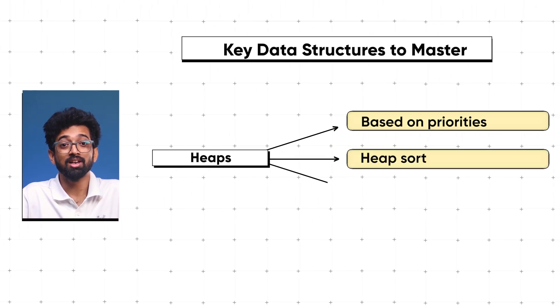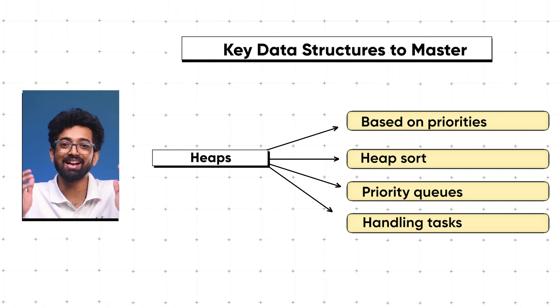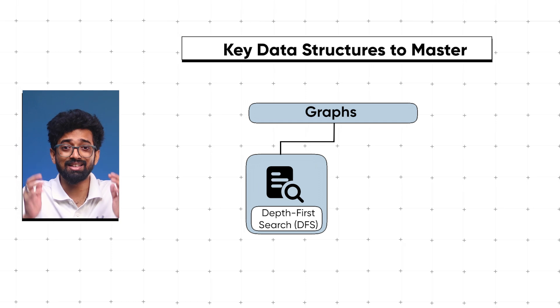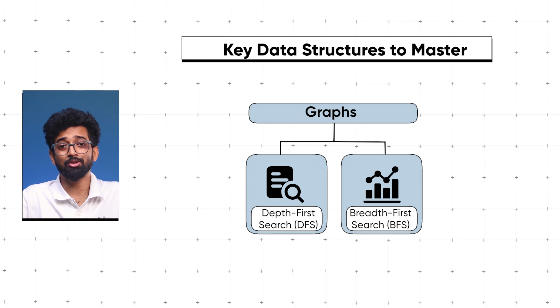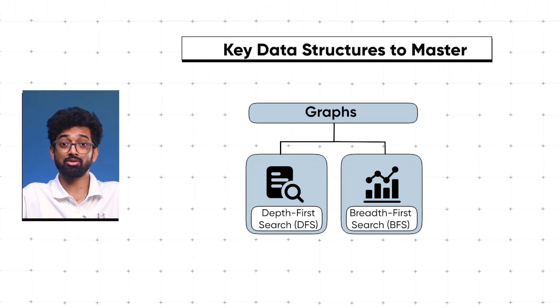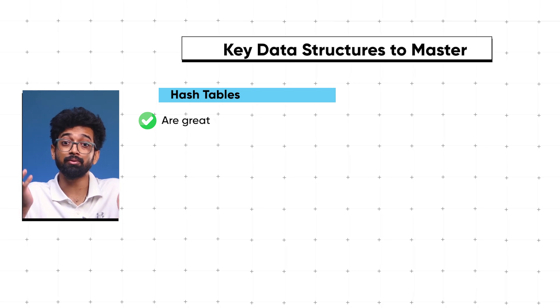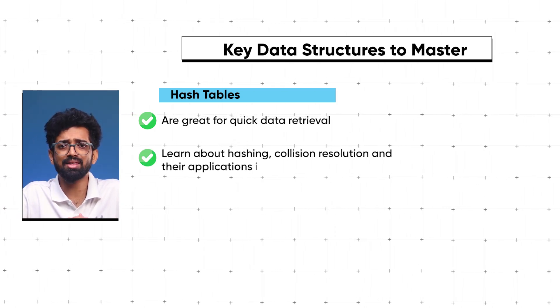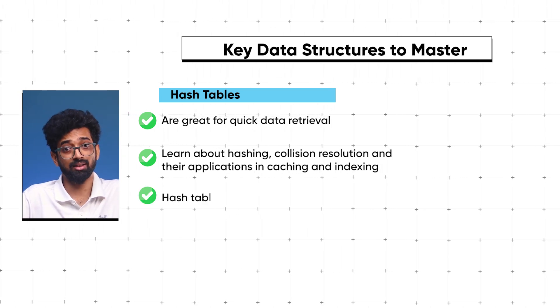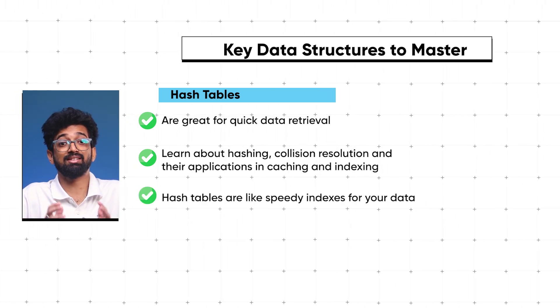Heaps manage data based on priorities and are used in algorithms like heap sort and for priority queues — think of a heap as a tool for handling tasks based on their importance. Graphs are everywhere, from social networks to routing algorithms. Learn traversal techniques like Depth First Search and Breadth First Search. Hash tables are great for quick data retrieval — learn about hashing, collision resolution, and their application in caching and indexing.